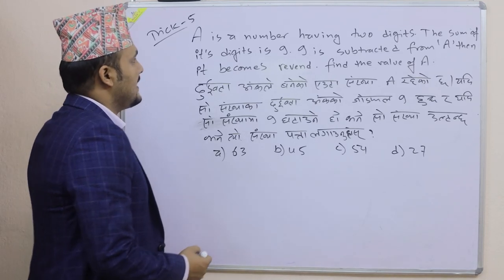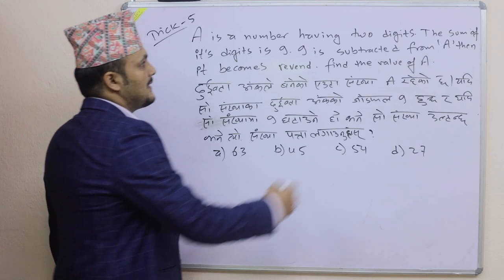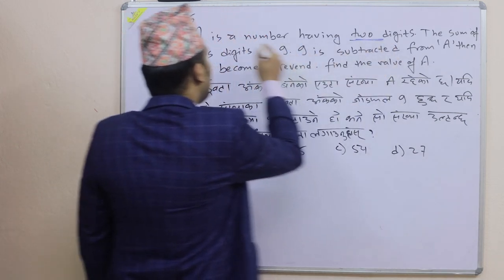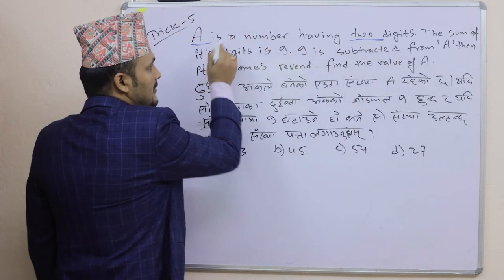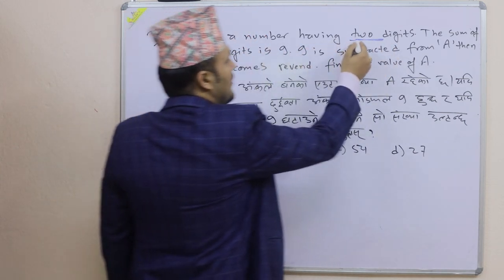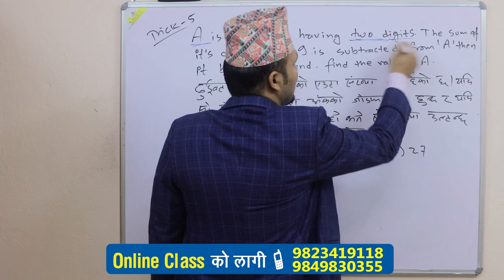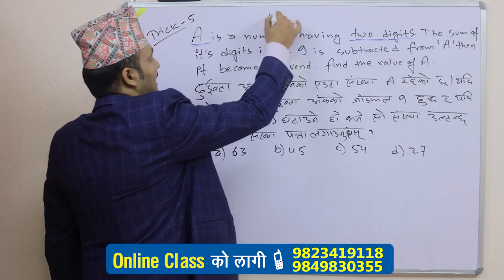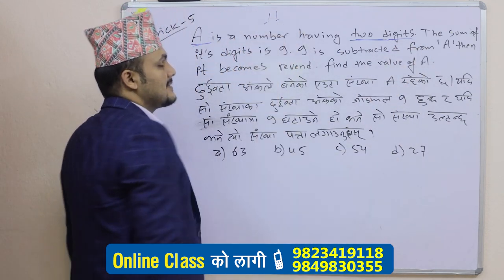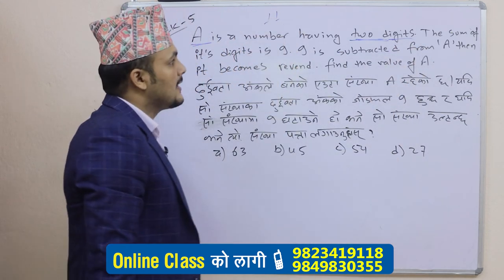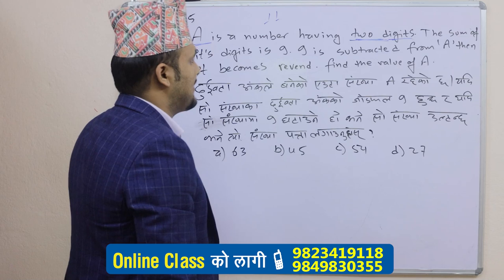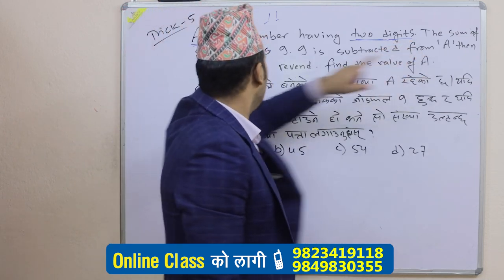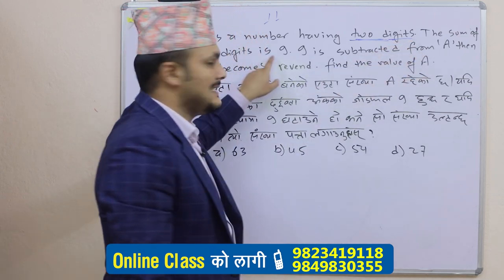A is a number having two digits. The sum of each digit is 9.